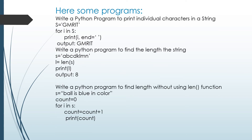Now let us discuss some programs using strings. The first program: write a Python program to print individual characters in a string. I set s = 'gmrit' in single quotes. Then using 'for i in s' to iterate over each character, and print(i, end=''), the output would be gmrit.